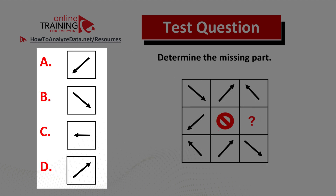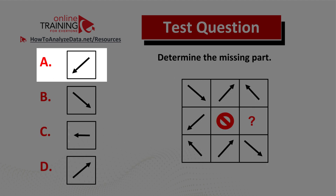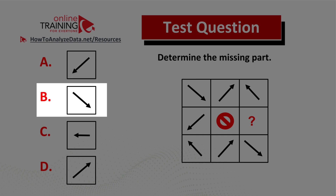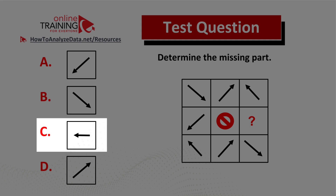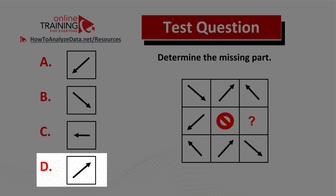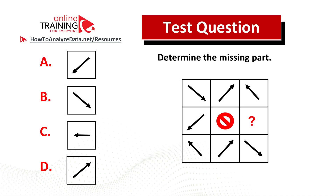And you have 4 different choices. Choice A: arrow pointing in the bottom left corner. Choice B: arrow pointing in the bottom right corner. Choice C: arrow pointing left. And choice D: arrow pointing in the upper right corner. Do you think you know the answer? Now might be a good time to pause this video to see if you can come up with the solution on your own.